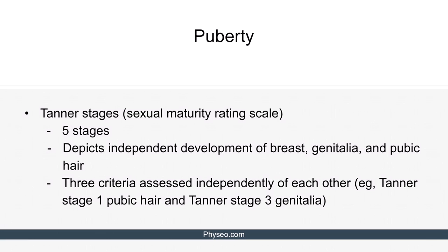In order to track puberty in boys and girls, we use Tanner stages, which is also known as the sexual maturity rating scale. There are five stages in the scale for both boys and girls.